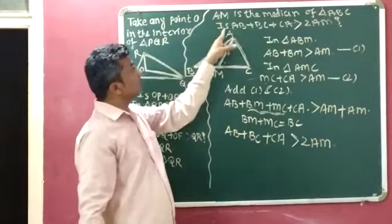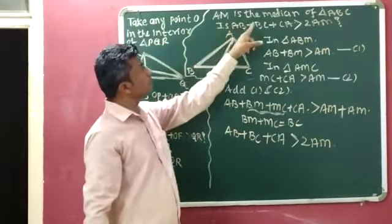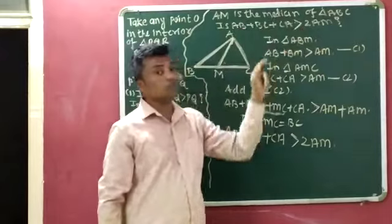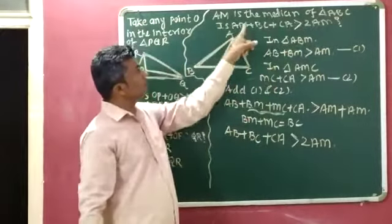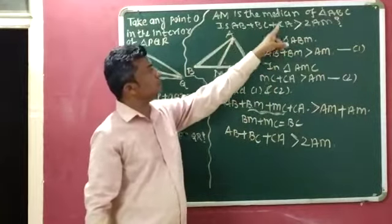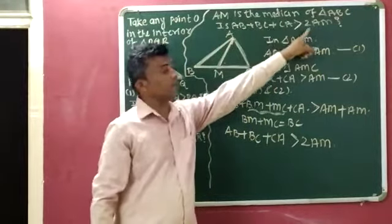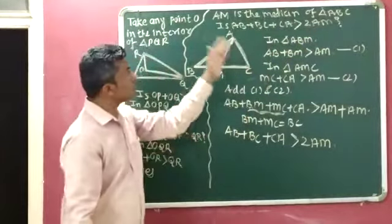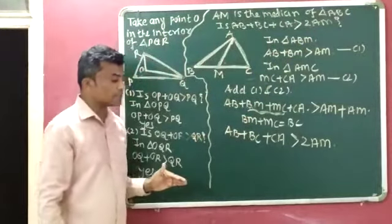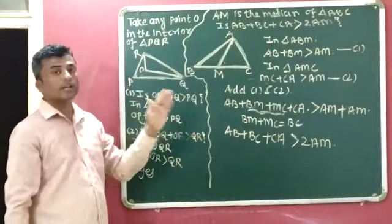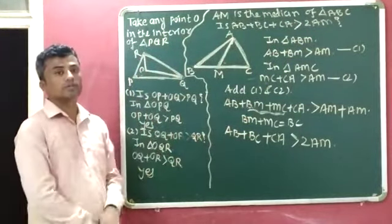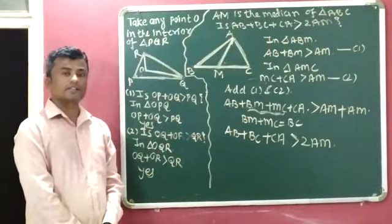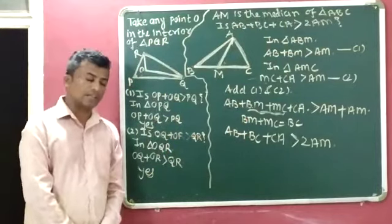So the final answer is: is AB plus BC plus CA greater than 2AM? Yes. AB plus BC plus CA is greater than 2AM. This is the explanation of question number 2 and question number 3. I hope you can understand this. Thank you.